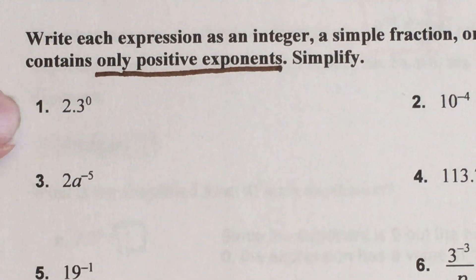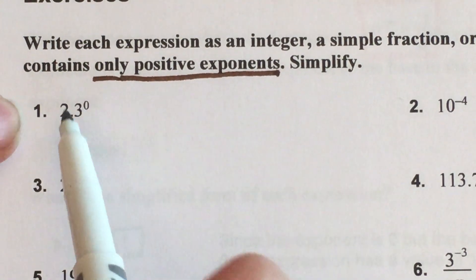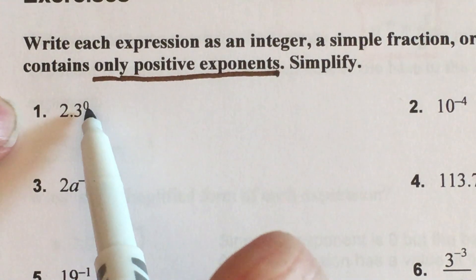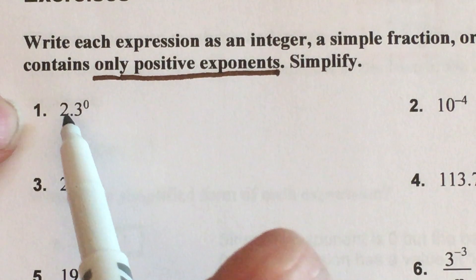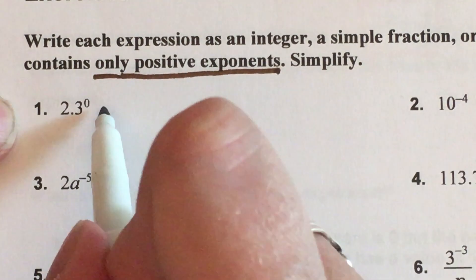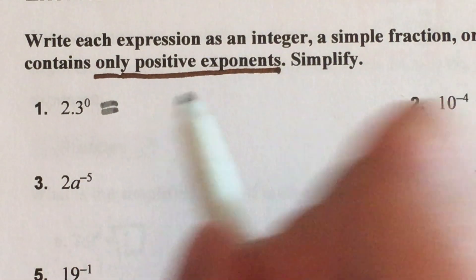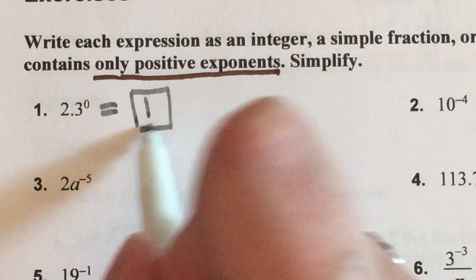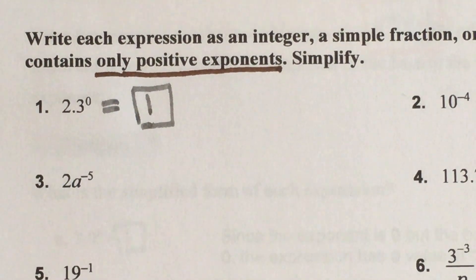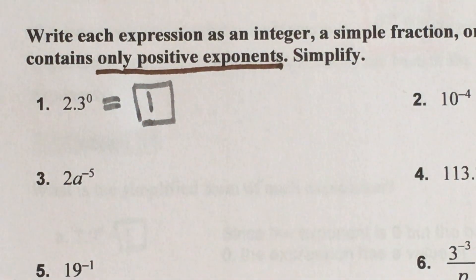Problem number one: any number in the whole wide world to the zero power, which includes 2.3, that's a number to the zero power, what does that equal? One. That's it, you're done. Love that problem, wish we had all of that every day.